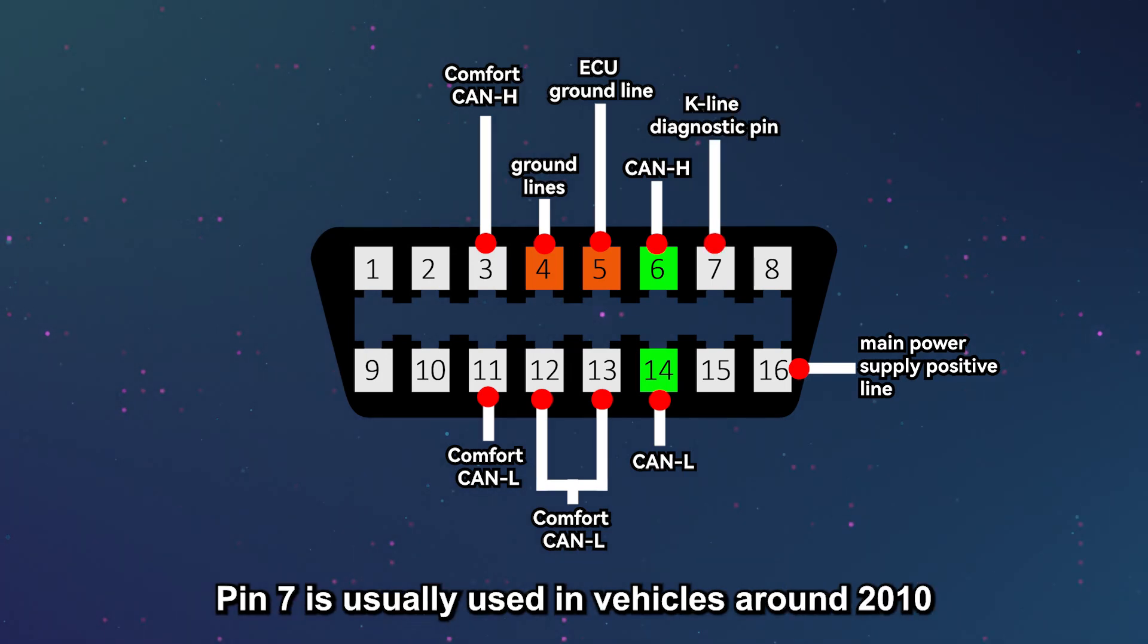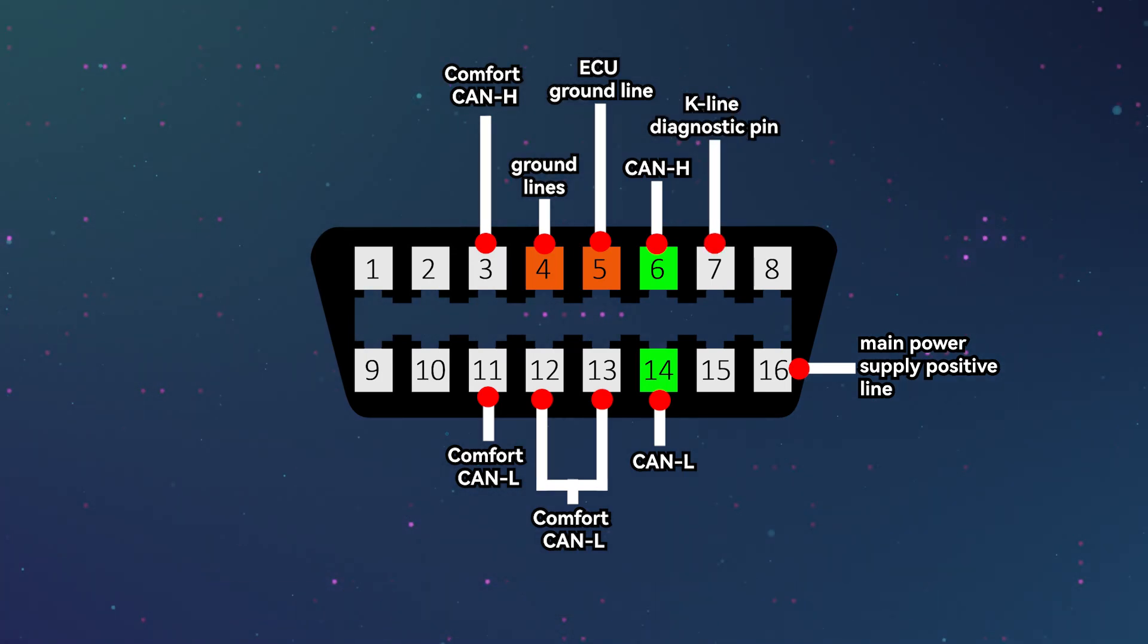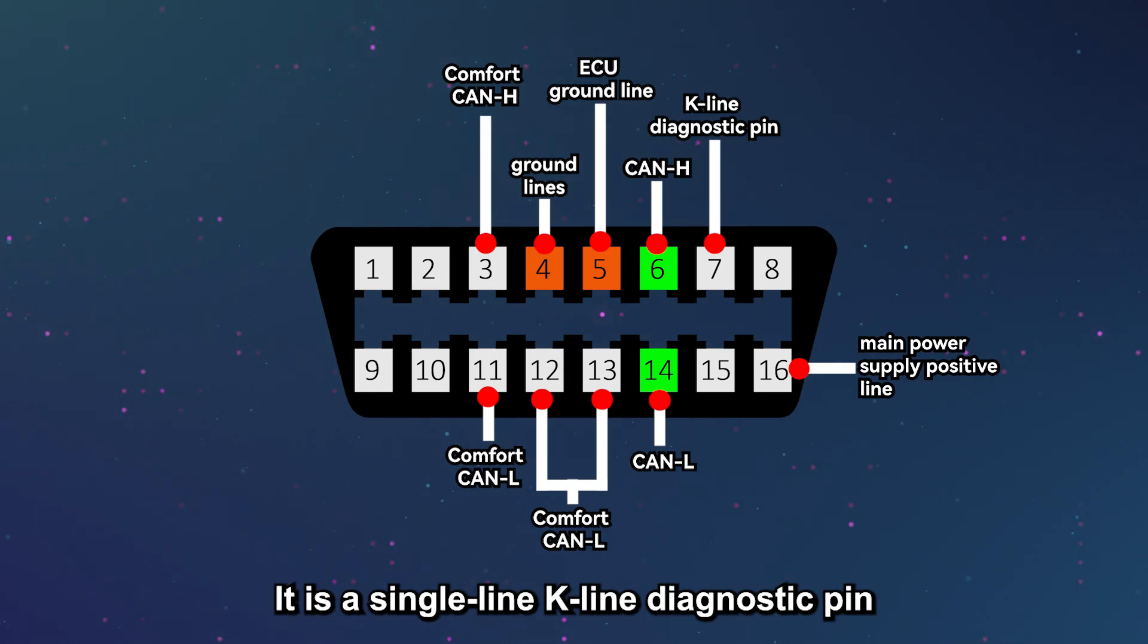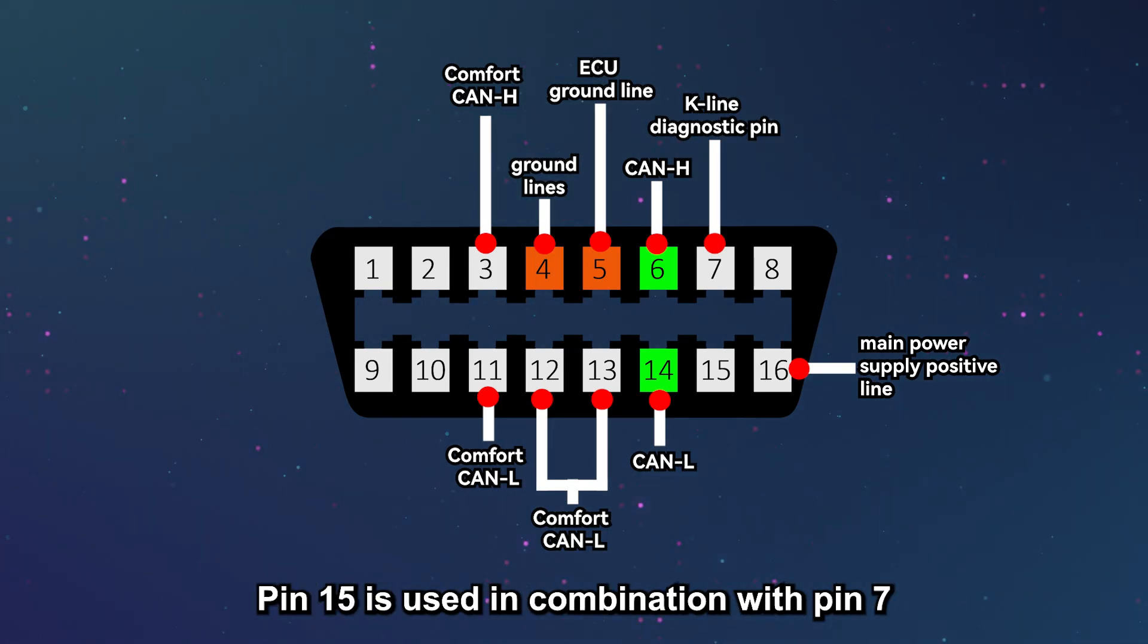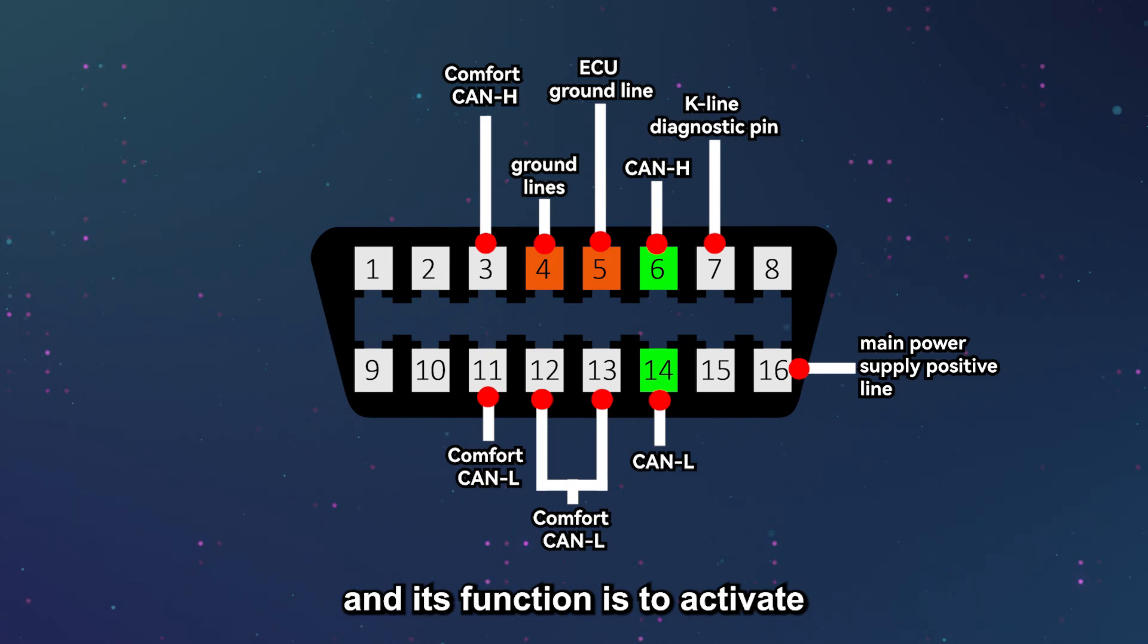Pin 7 is usually used in vehicles around 2010. It is a single-line K-Line diagnostic pin. Pin 15 is used in combination with pin 7, and its function is to activate.